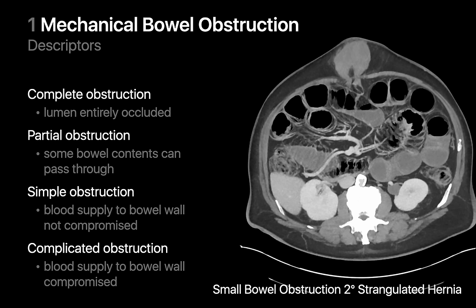Mechanical bowel obstructions can be classified in many ways. Obstructions can be complete, resulting in occlusion of the entire bowel lumen, or partial, where some bowel contents can pass through. In cases of partial small bowel obstruction, some gas may be present in non-distended GI tract downstream of the obstruction, resulting in a disparity in expected bowel diameter upstream versus downstream. Obstructions can also be classified as simple versus complicated. In a simple bowel obstruction, the blood supply to the bowel wall is intact, while in a complicated obstruction, the blood supply is compromised, which can lead to bowel ischemia, infarct, and perforation.